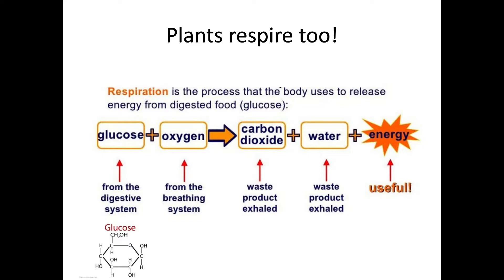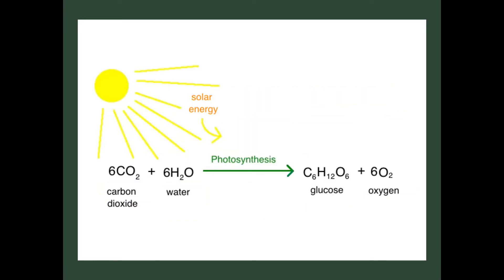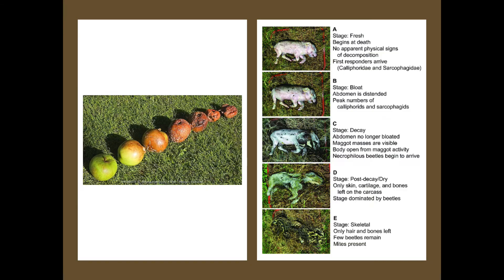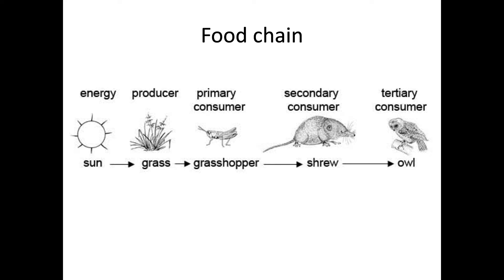Respiration is something all living things do — and I've put in big letters that plants respire too, because that gets forgotten. People remember that plants photosynthesize, but they forget that plants also respire. Humans do, animals do, but so do plants, and it is part of the carbon cycle. Death and decay is vital in the carbon cycle — all dead things contain carbon, and that carbon has to be broken down by decomposers.